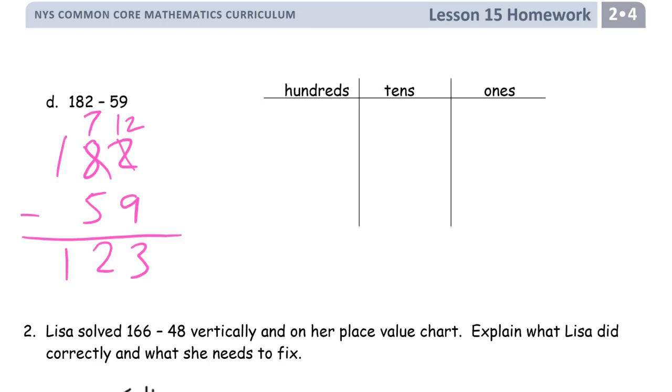So our minuend was 100, 82. So that's 10, 20, 30, 40, 50, 60, 70, 80, 81, 82. And we need to cross out 5 tens and 9 ones, but we don't have 9 ones. So we have to break up one of these tens.